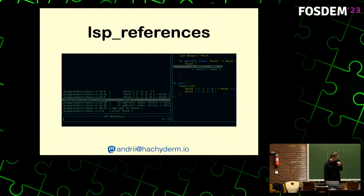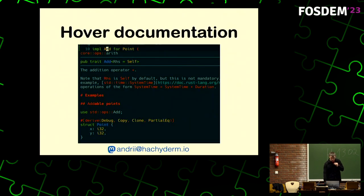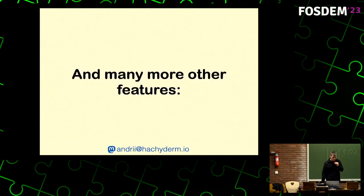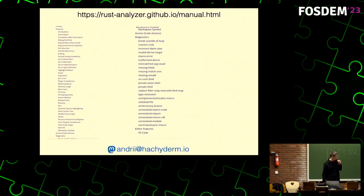LSP references is more or less language-agnostic — it's an extension of Telescope which gets and shows you things like hover documentation, signature help, and many more features which I unfortunately can't cover in this short talk. But I highly recommend you go to the rust-analyzer page and see how smart it is.